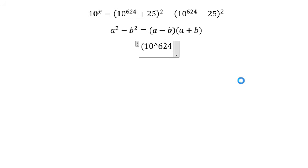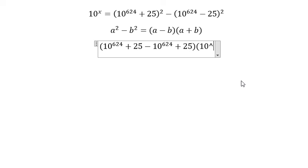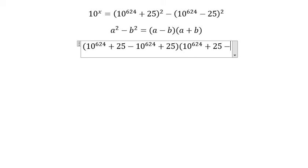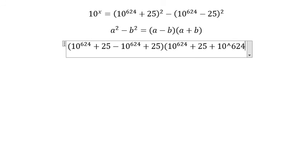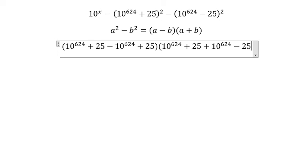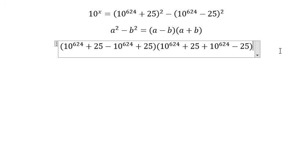10^624 + 25 - 10^624 + 25, and we have 10^624 + 25 plus 10^624 - 25. And now we need to simplify the number.